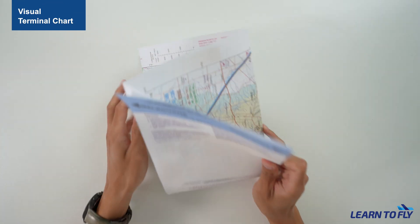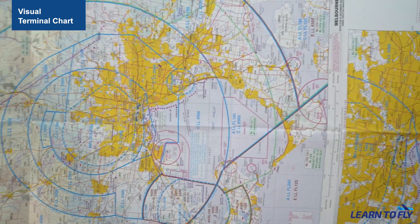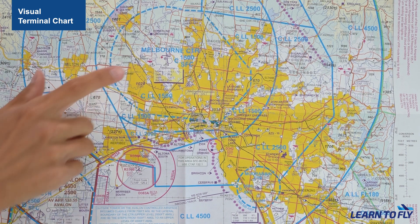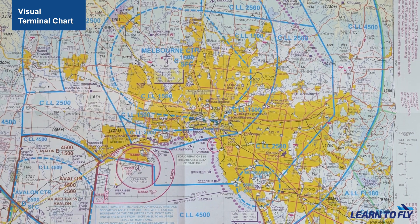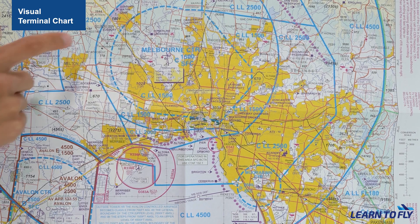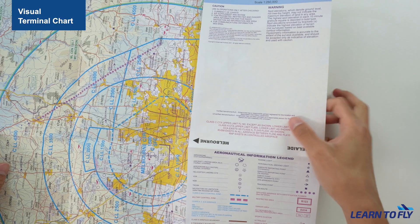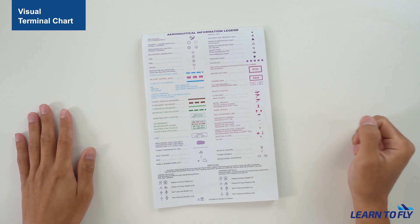We have plenty of charts here, so we'll go through them one by one. VTC is also known as the Visual Terminal Chart. It has a larger scale, so it is going to show the most detail but less area of coverage. VTC is more suitable for departing and arriving into metropolitan airports, and that is why only major cities have VTC coverage, such as Melbourne, Sydney or Brisbane. It also shows radio frequency and airspace boundaries. If you find any symbols that you are unfamiliar with, you can refer to the legend page of the map.